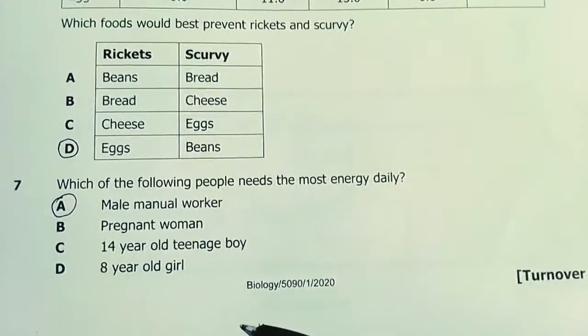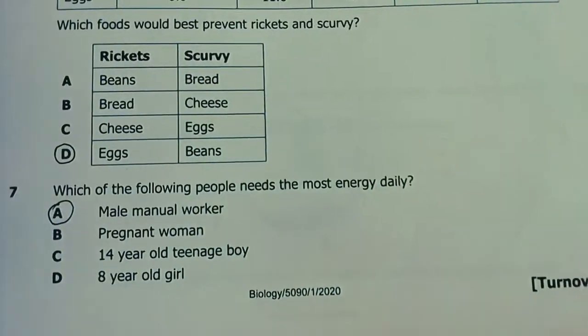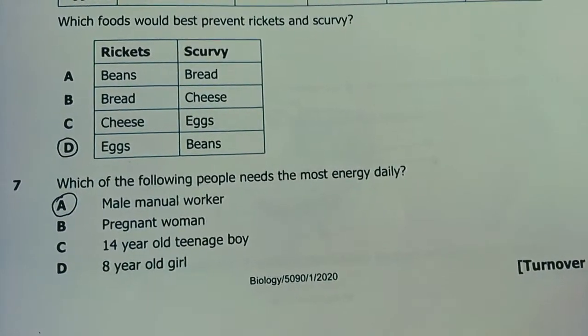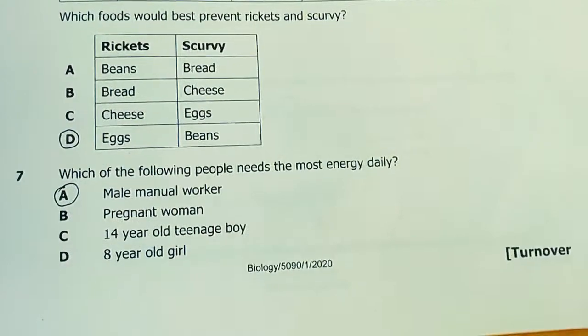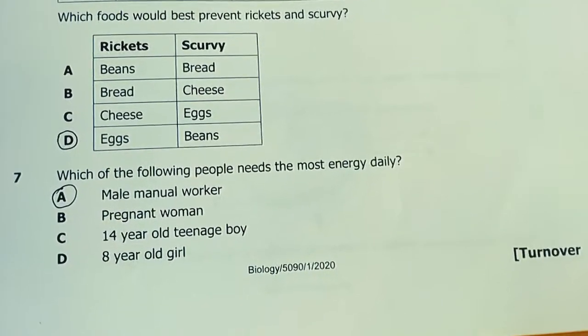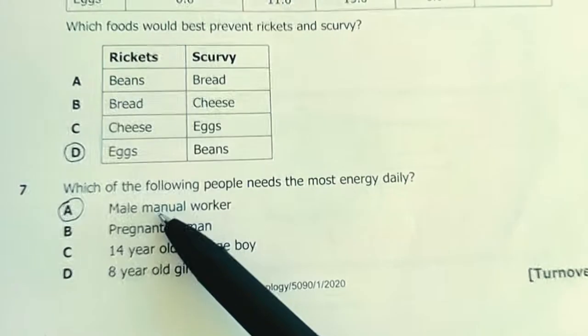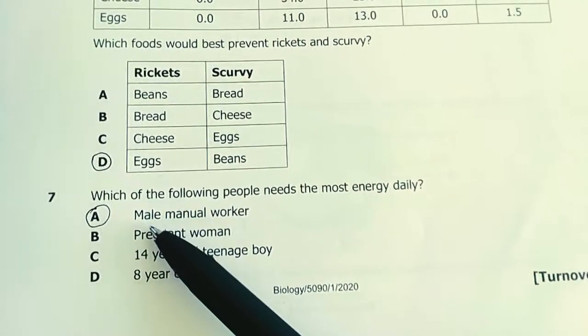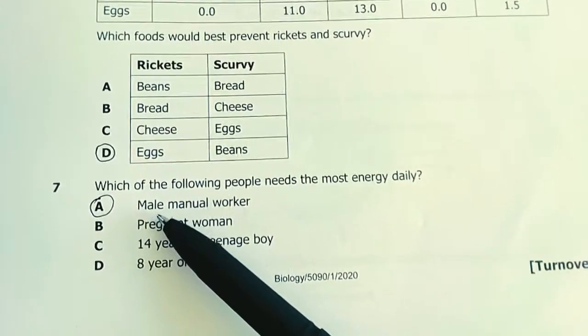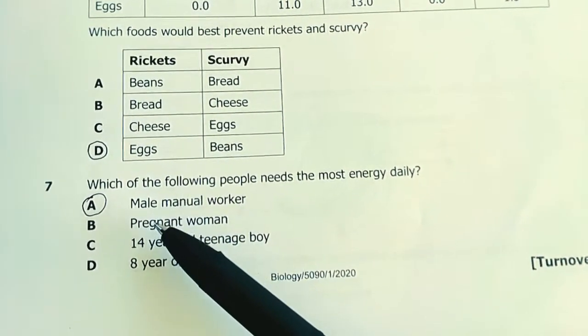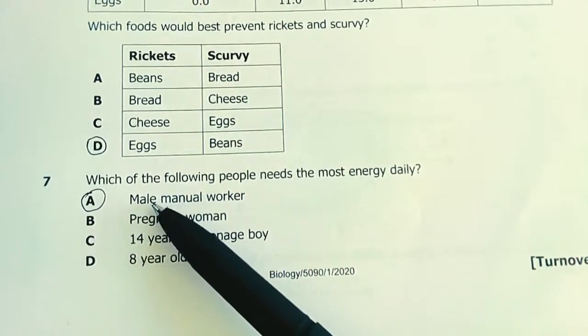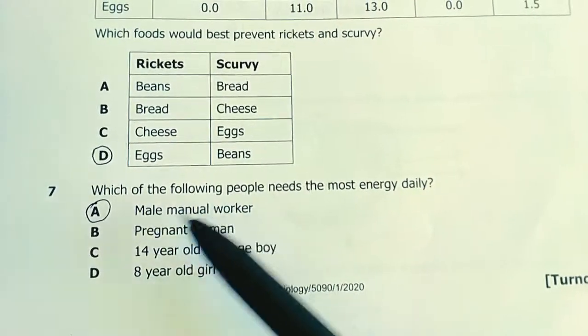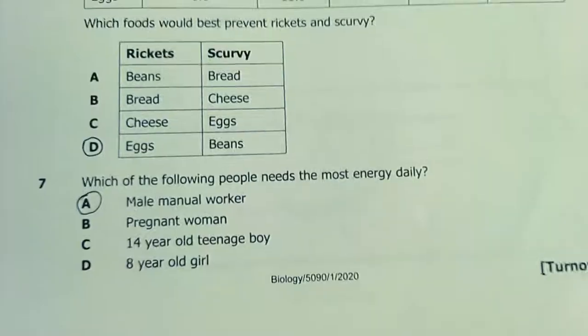Number 7, biology 2020 paper one. Which of the following people needs the most energy daily? You can see directly: manual worker, male. Males have high metabolism rates, higher basal metabolic rate. You're a male and you do hard work, therefore you need more energy giving foods.